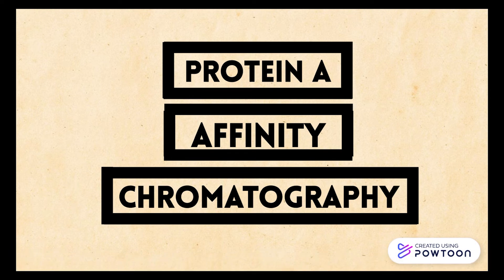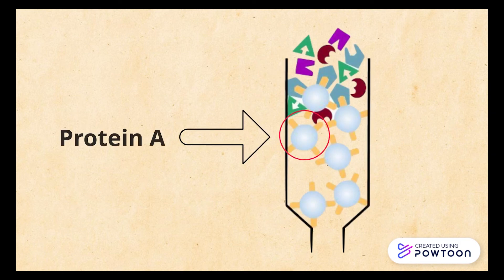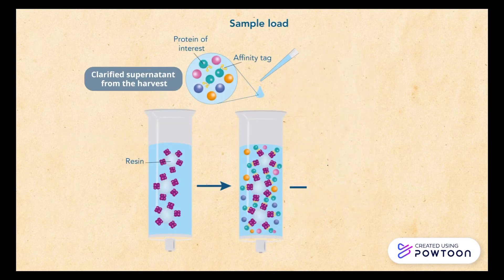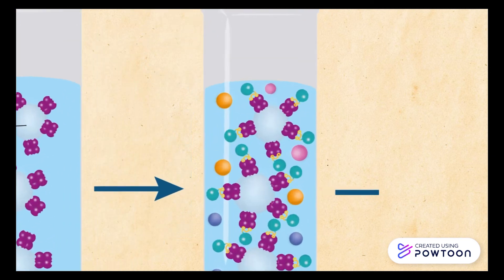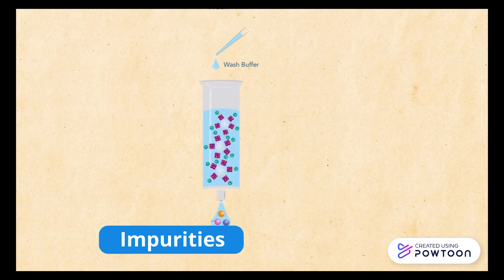Protein A affinity chromatography involves a ligand called Protein A that is immobilized in a matrix in the walls of the chromatography column. The clarified supernatant obtained from the harvest is loaded into the column, and as it passes through, monoclonal antibodies bind to the ligand, allowing the impurities to leave the column.